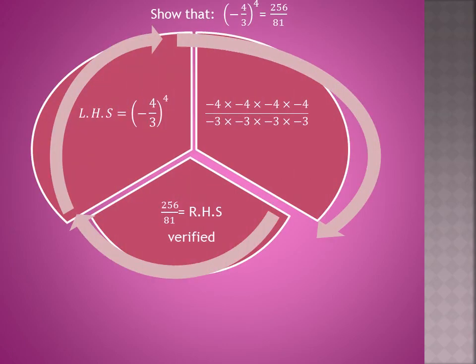In this question, we have to verify that (-4/3)^4 equals 256/81. There are two sides: left-hand side and right-hand side.